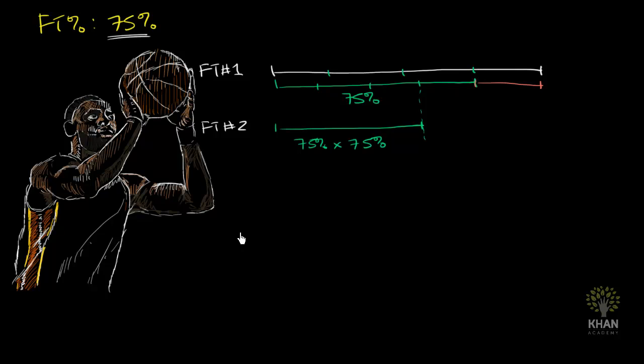And I think you might begin to see a pattern emerging. Let's go to the third free throw. Free throw number three. So what percentage of these folks are going to make the third one? Well, 75% of them are going to make the third one.